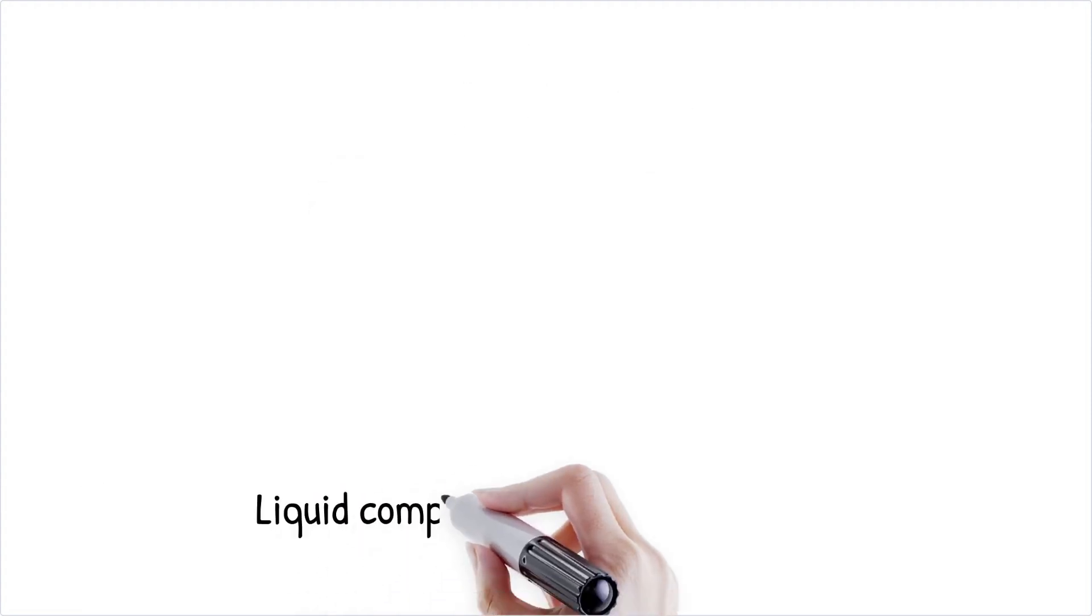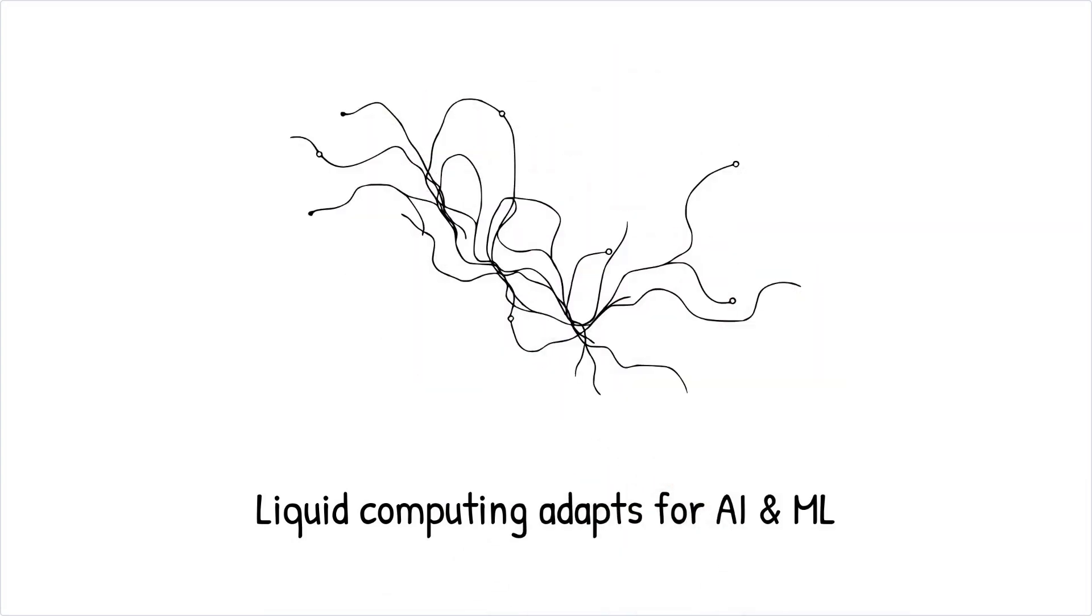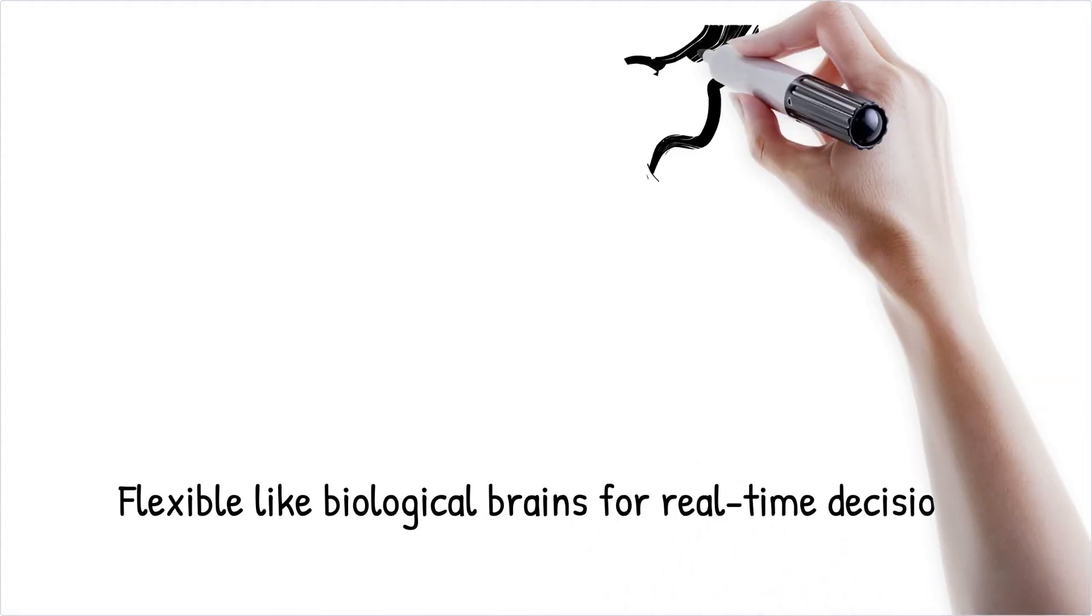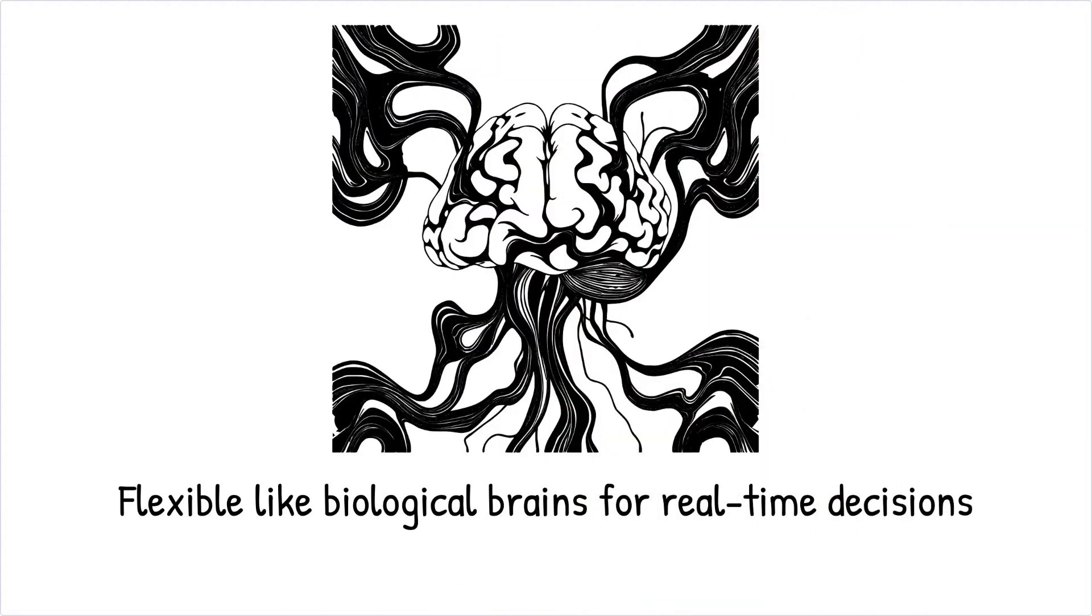Liquid computing's adaptability makes it an ideal platform for artificial intelligence and machine learning. Fluidic circuits can physically reshape themselves to simulate neural network behaviors, enabling hardware-based learning and optimization. This property allows for a level of flexibility that mimics the plasticity of biological brains, making liquid systems particularly suited for real-time decision-making, pattern recognition, and complex problem-solving tasks. Furthermore, their compatibility with biochemical processes positions them as valuable tools in bioinformatics and personalized medicine.